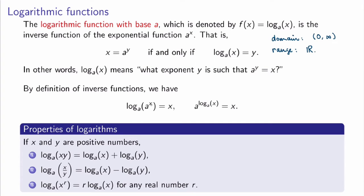From inverse functions, if you start with x, apply a function, then its inverse, you go back to x — as long as x was in the domain. So applying exponential then logarithm returns x (for all real x), and applying logarithm then exponential returns x (for all strictly positive x). Logarithms also satisfy nice properties, analogous to those for exponentials: log(xy) = log(x) + log(y), log(x/y) = log(x) − log(y), and log(x^r) = r·log(x), which brings down the exponent.